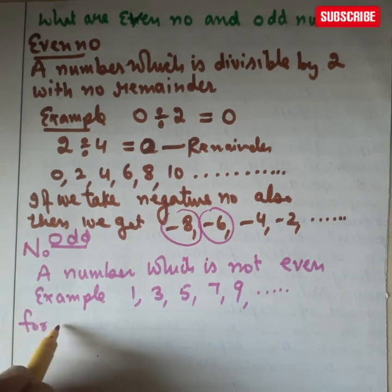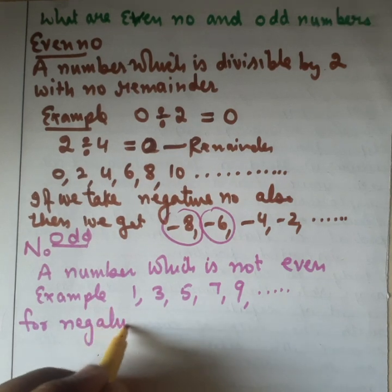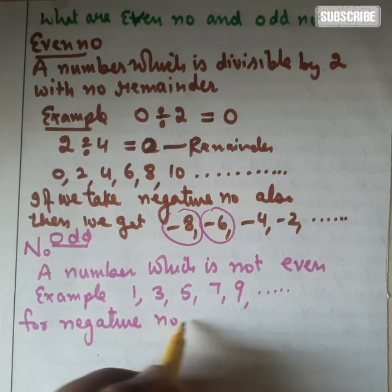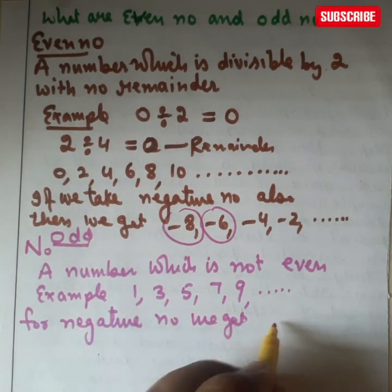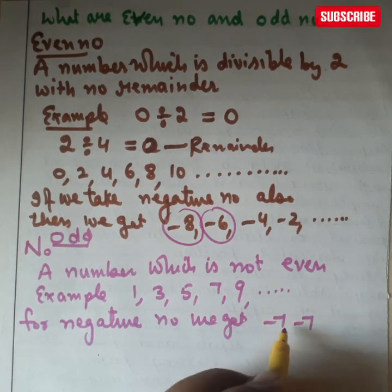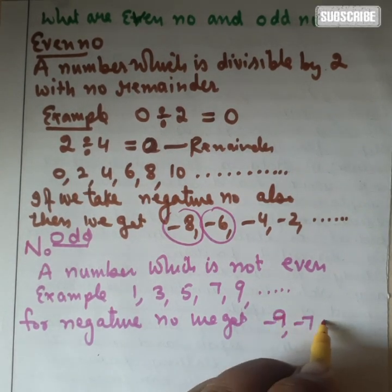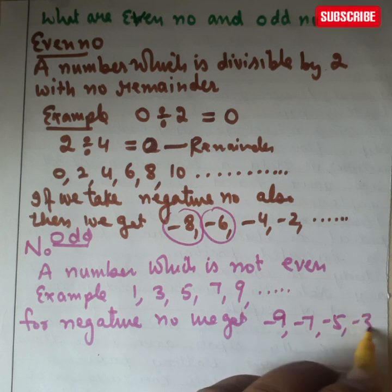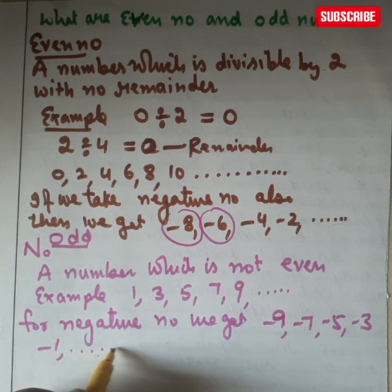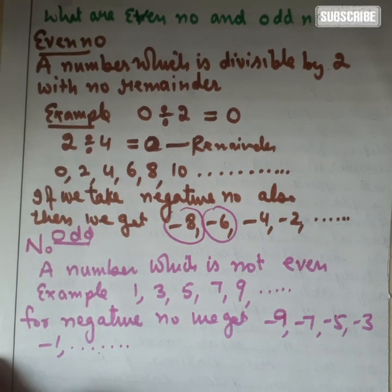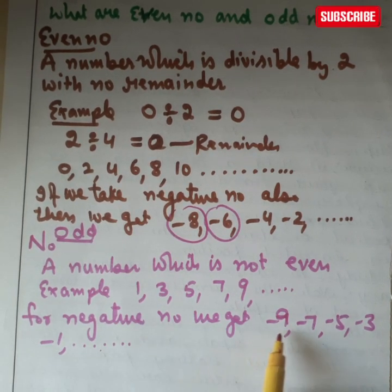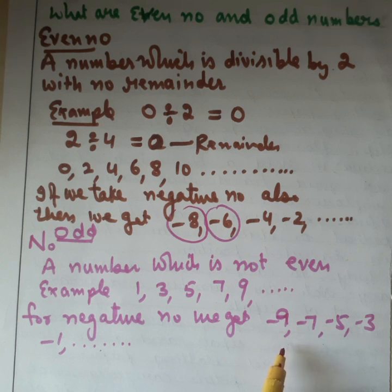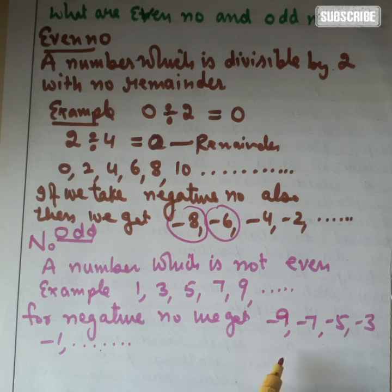Even some negative numbers exist among odd numbers. So we get minus 7, minus 9, minus 5, minus 3, minus 1, and so on. If all these numbers are divided by 2, you will not get remainder zero. You will get at least 1 or some other number as a remainder.